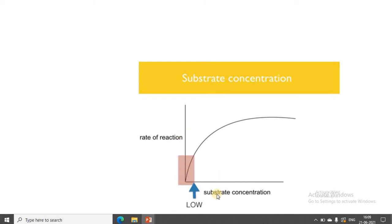On this graph, the x-axis represents substrate concentration and the y-axis represents enzyme activity or rate of reaction. At low concentration of substrate, the substrate has a different effect. At low concentration of substrate, the enzyme is highly active — the activity will be very fast.